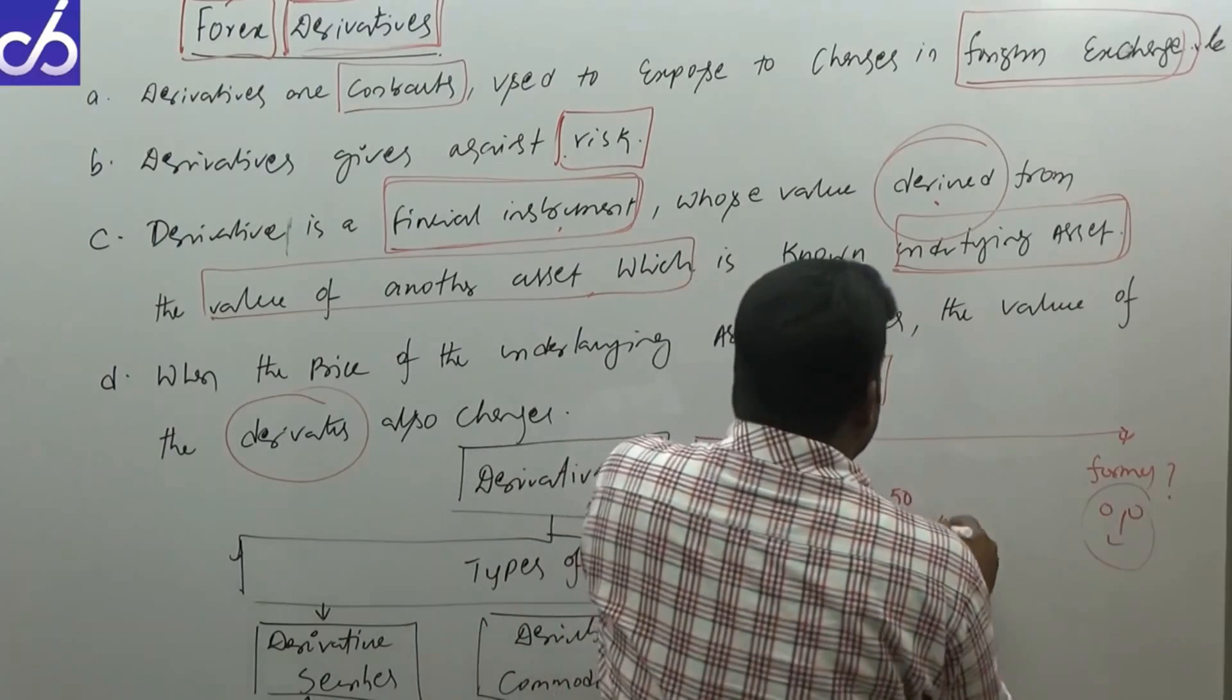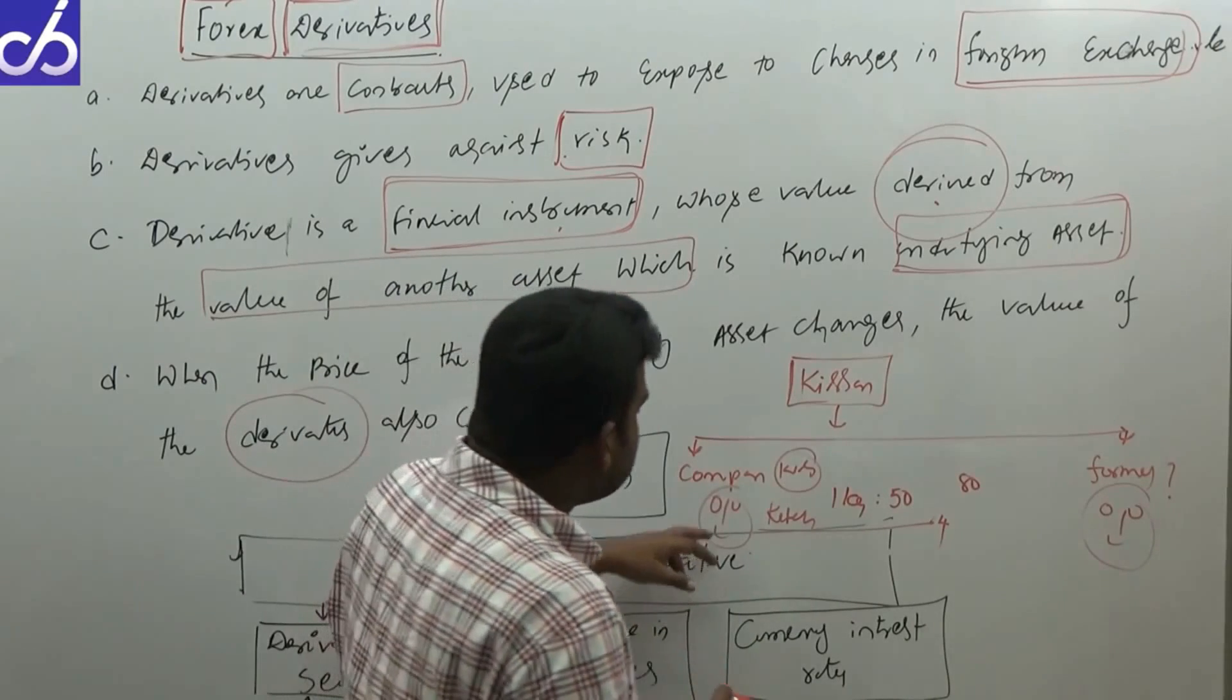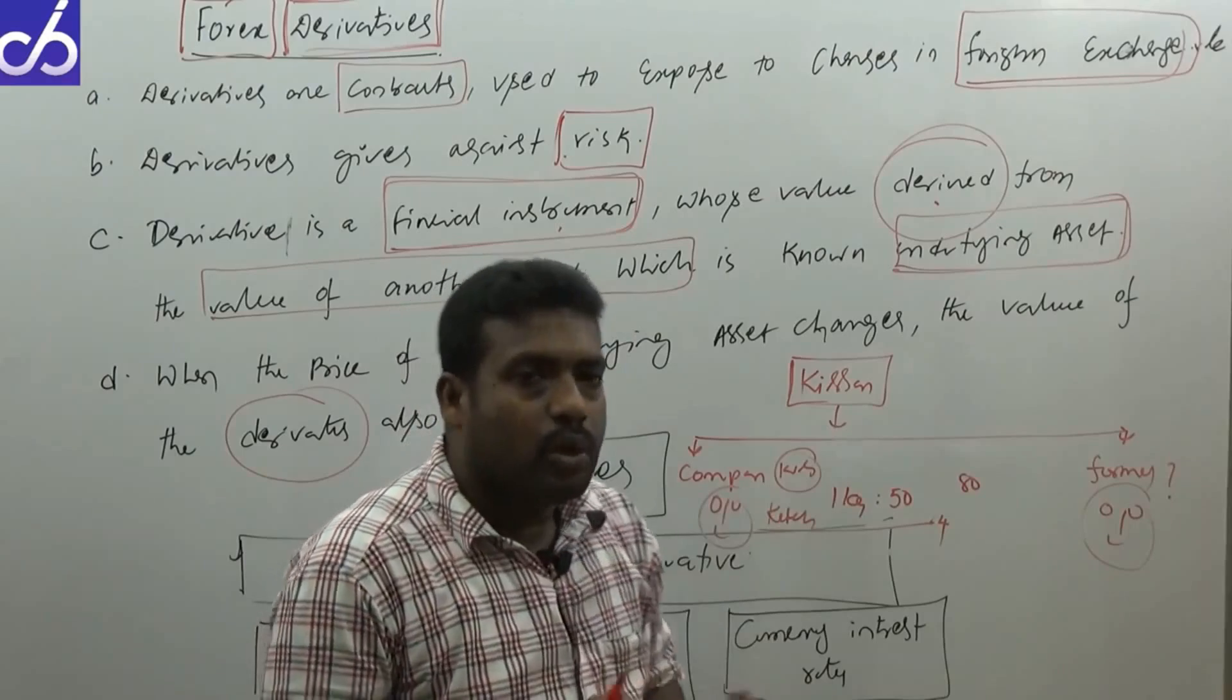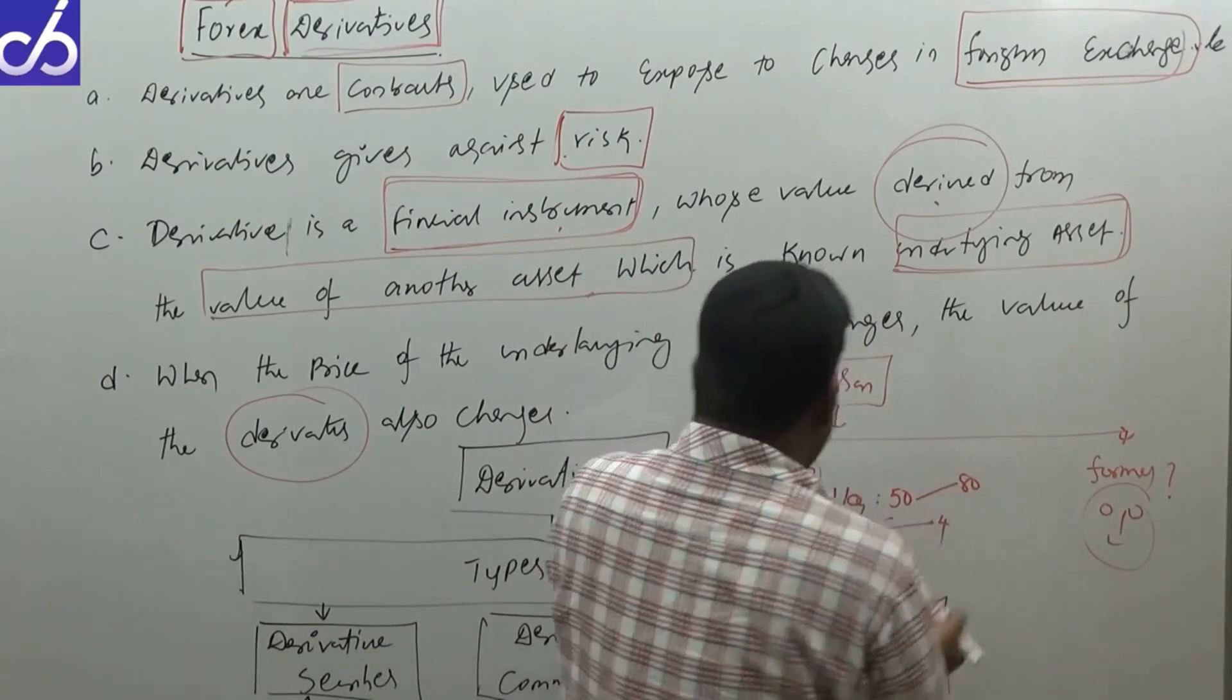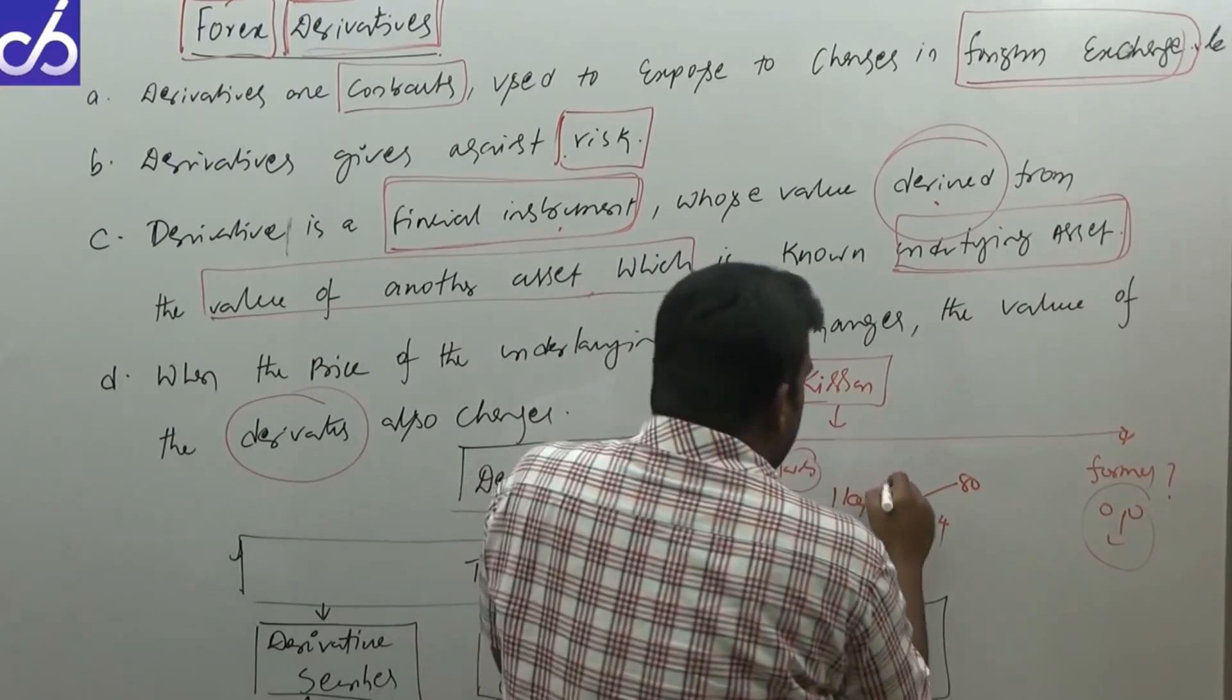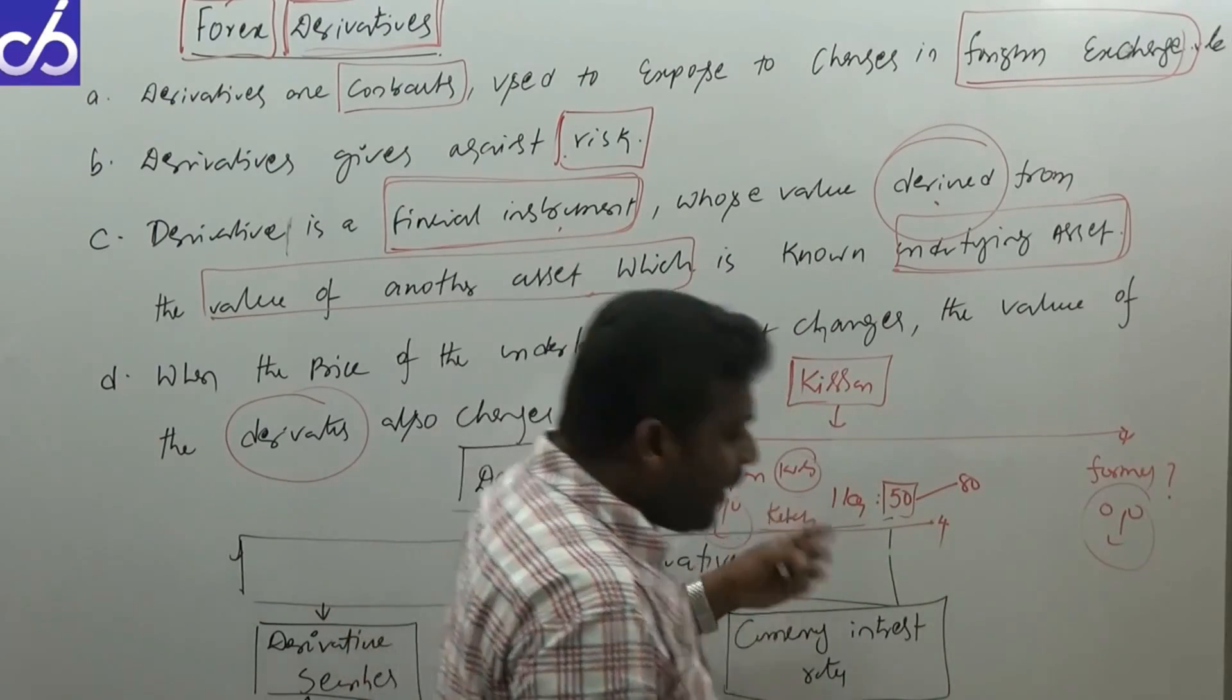There is a risk element here. At present he doesn't have any risk, but in future the tomato price may go to 80 rupees. In this case, Kissan company has a risk element because 50 rupees of tomato he is supposed to buy at 80 rupees.